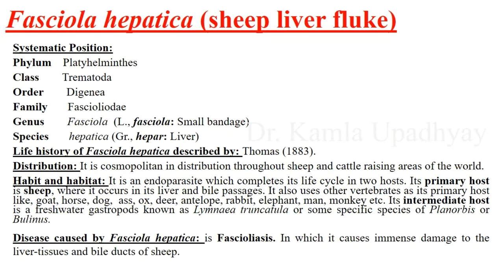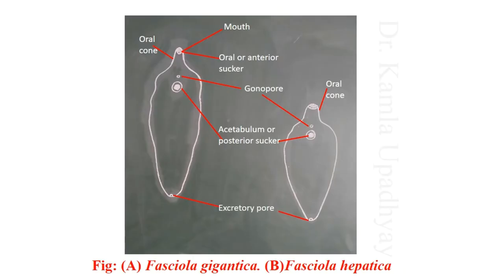Its primary host is sheep, where it occurs in the liver. Its secondary host is Lymnaea — a freshwater gastropod snail — or similar species like Planorbis or Bulinus. The disease caused by Fasciola hepatica is called fascioliasis, or it is also called liver rot.